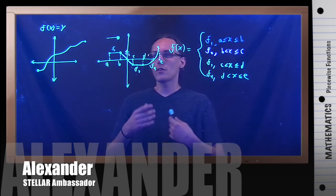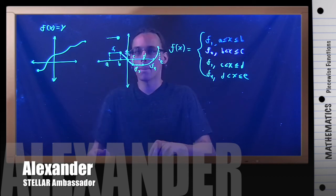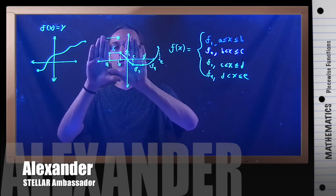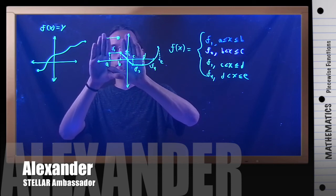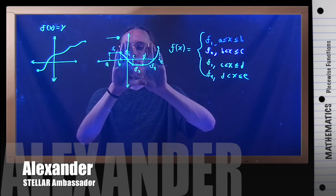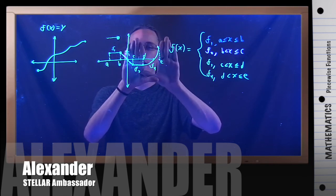So the idea of a piecewise function is just that. It's just that you're going to cut up the x-axis and you're just going to say, in between here, graph this function. In between here, graph this function. In between here, graph this one. And in between here, graph that one.